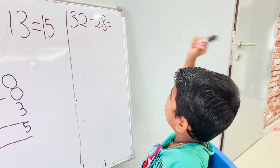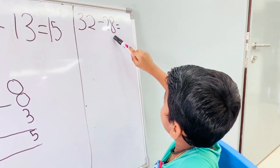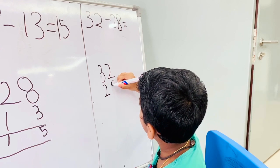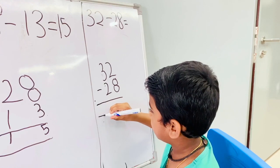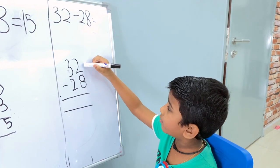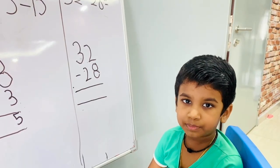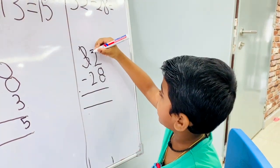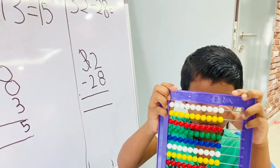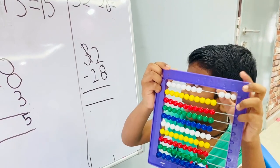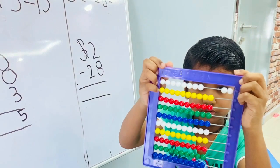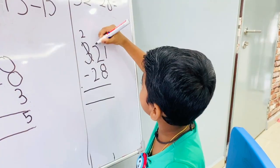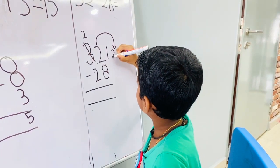Now let's go to the difficult one. 32 minus 28 equals to? 8 is bigger than 2, so we cannot minus from 2. For that, we borrow one number from 3. So I have to cross this. Then I have to take 3. 3 minus 1 equals to? I take 1, 2, 3, minus 1 — so 2. Write up 2, then write here 1. This 2 has to come here, so it becomes 12.